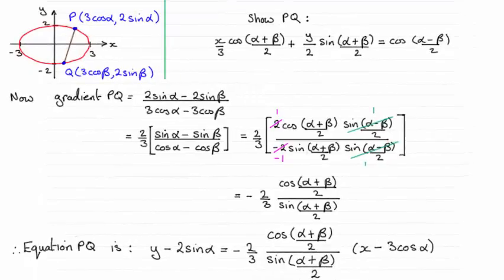Hi there. Now for this question we were given the ellipse which you can see I've sketched here and the coordinates P and Q, and we're asked to show that the equation of the line passing through P and Q is given by this.